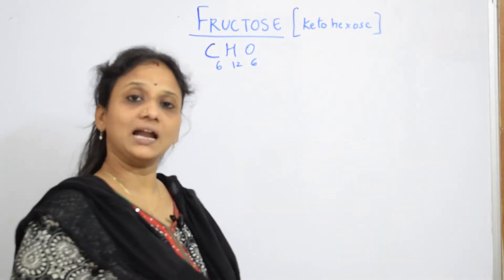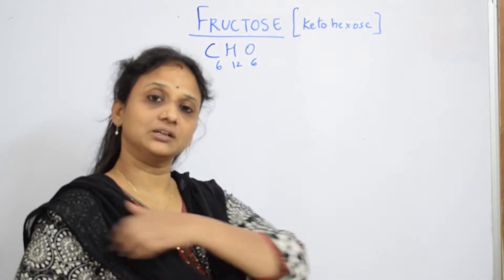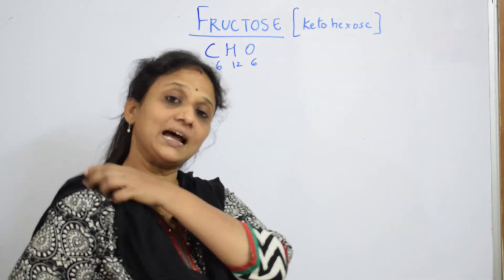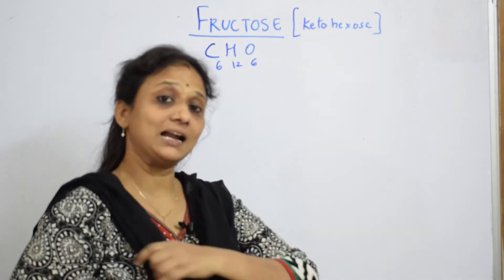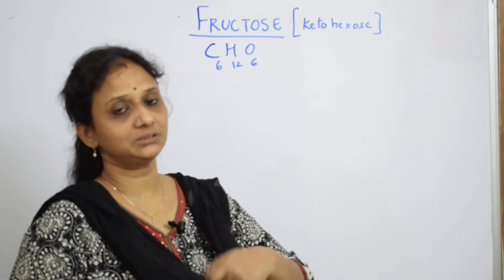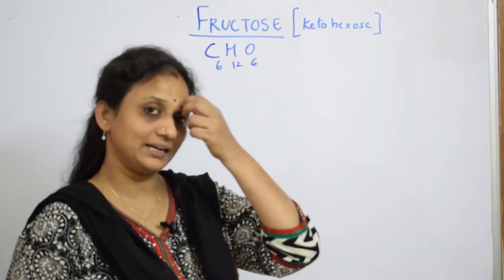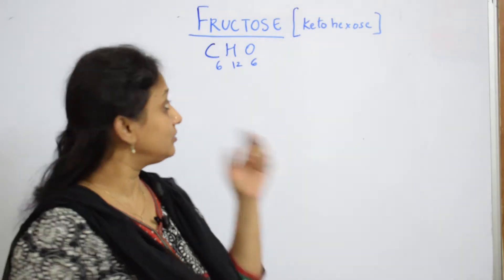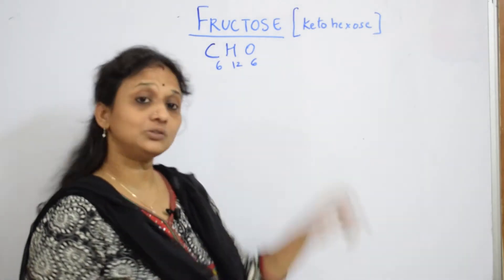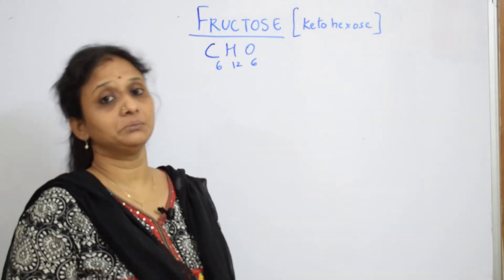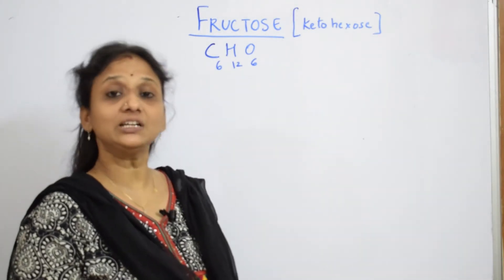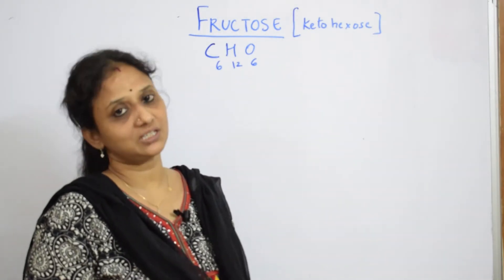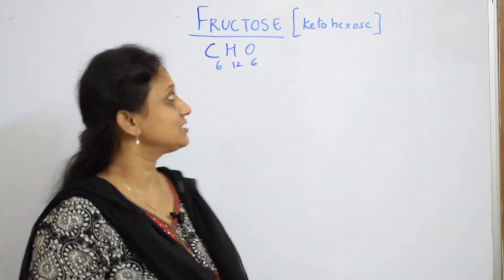In glucose, we called it as aldohexose because it has an aldehyde group. Here we call it as ketohexose because you have a ketonic group in the structure. Let us see the structure.